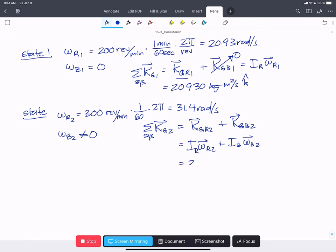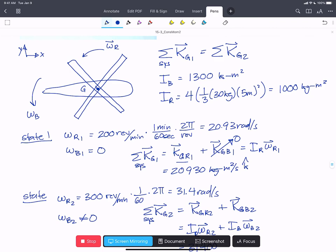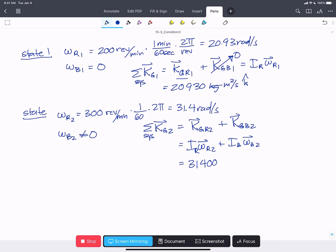And we can write that as 31,400. That's going to be IR, that I hasn't changed, times the new omega r plus 1300 omega b2.